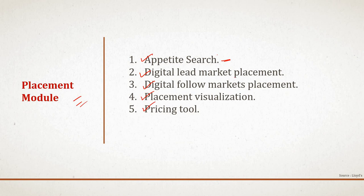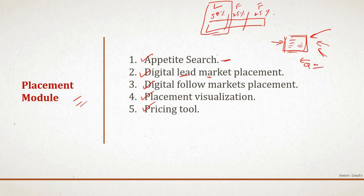Digital lead market placement is where the broker puts all relevant information so that many syndicates can view it. Once syndicates analyze the risk information they can submit their quotation. The broker is trying to identify the lead for the risk they want to place. Once they get the lead from the digital lead market placement module, they look for followers. For example, if 50% of the risk is accepted by the lead, they need to find followers for the remaining portion. The digital follow market placement module helps them find those followers.